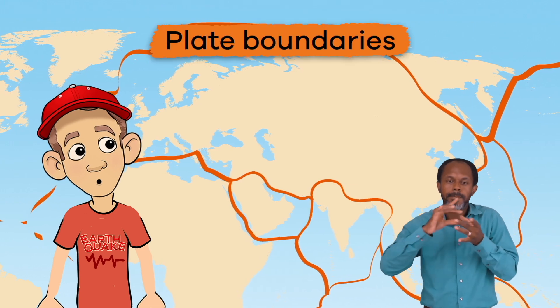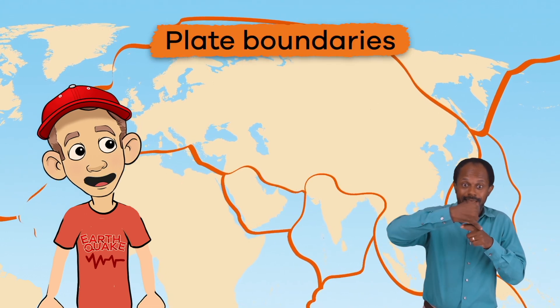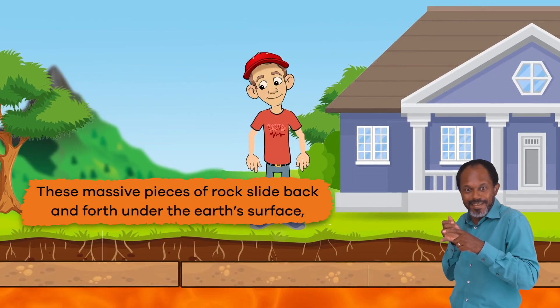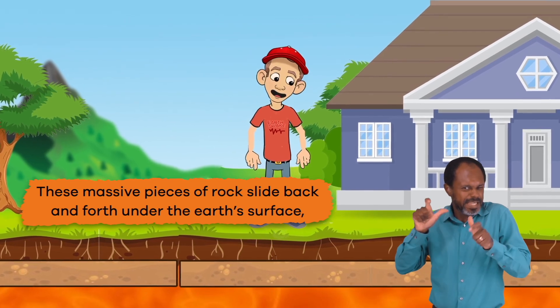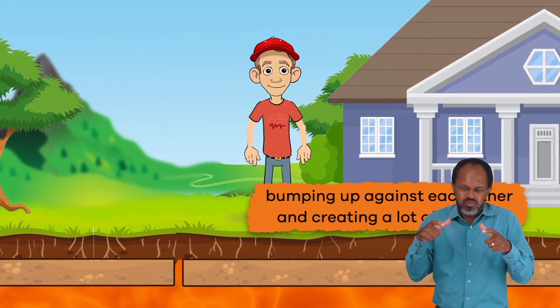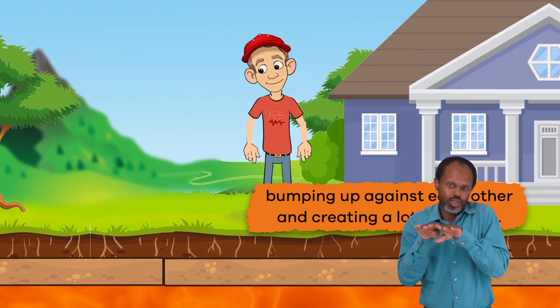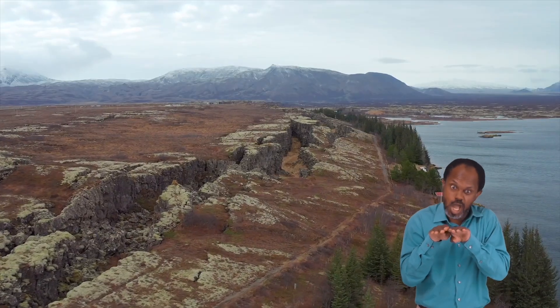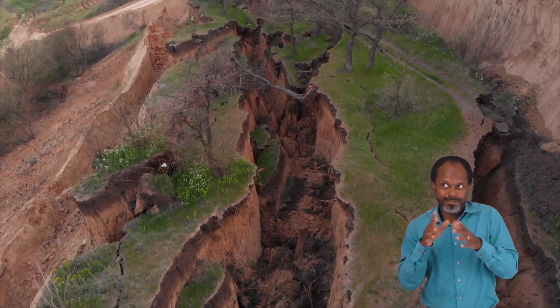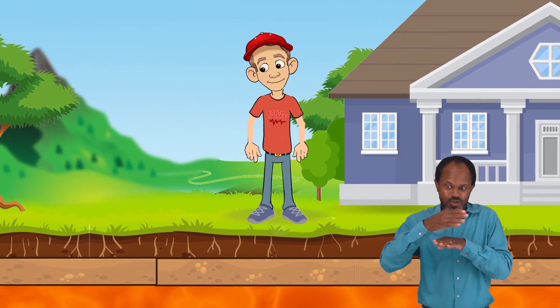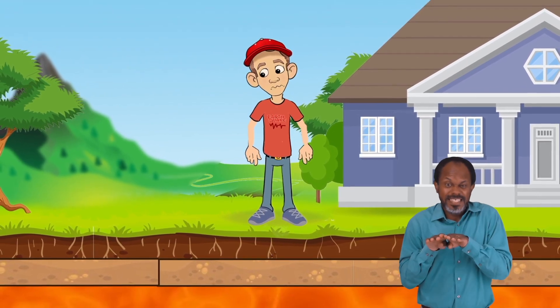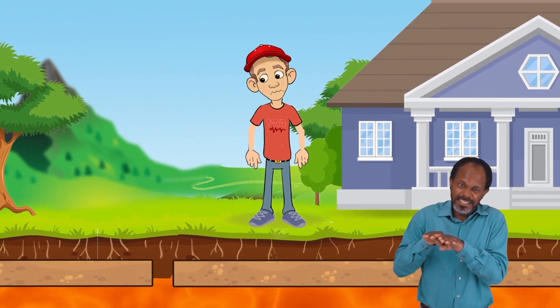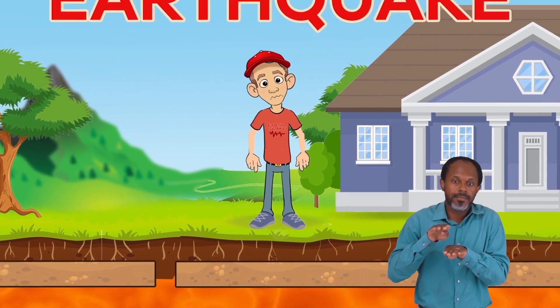The edges around the tectonic plates are called plate boundaries. These massive pieces of rock slide back and forth under the Earth's surface, bumping up against each other and creating a lot of tension. This tension and movement create faults, which are basically huge cracks in the rock. When the faults get stuck, they build up pressure. And when they get unstuck, you guessed it — an earthquake.